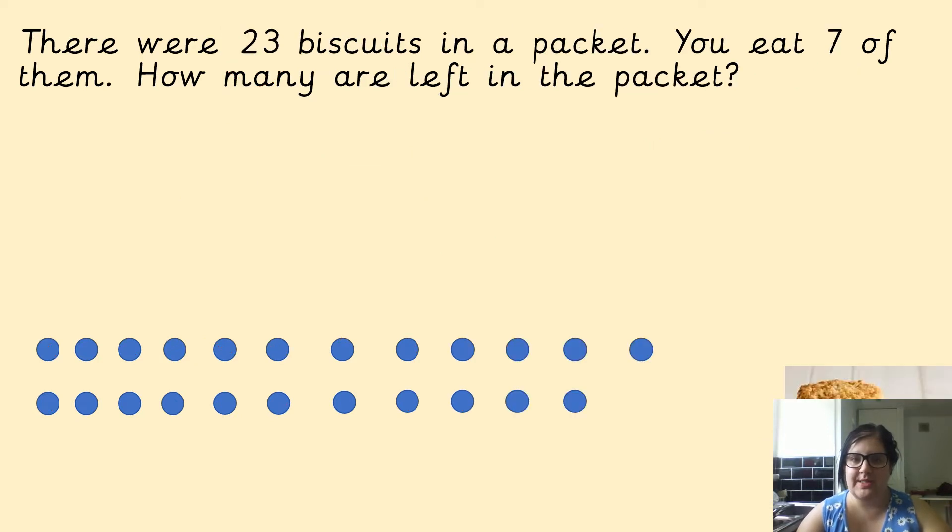This time there are 23 biscuits. It does not matter that they are biscuits. It does not matter that they are in a packet. You eat 7 of them. How many are left? There is the clue. 23. If you are working out how many are left, it is a take away. Take away 7 equals.